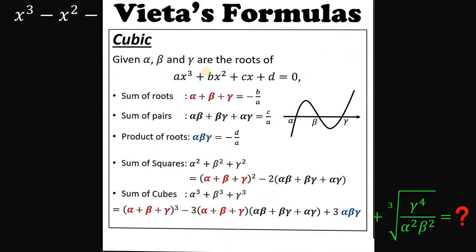Given that alpha, beta, and gamma are the roots of the cubic equation a·x cubed plus b·x squared plus c·x plus d equals 0, then: the sum of the roots alpha plus beta plus gamma equals negative b over a; the sum of pairs alpha·beta plus beta·gamma plus alpha·gamma equals c over a; and the product of the roots alpha·beta·gamma equals negative d over a.